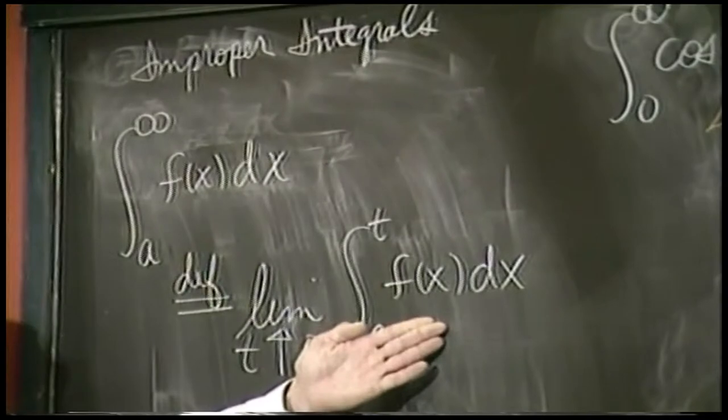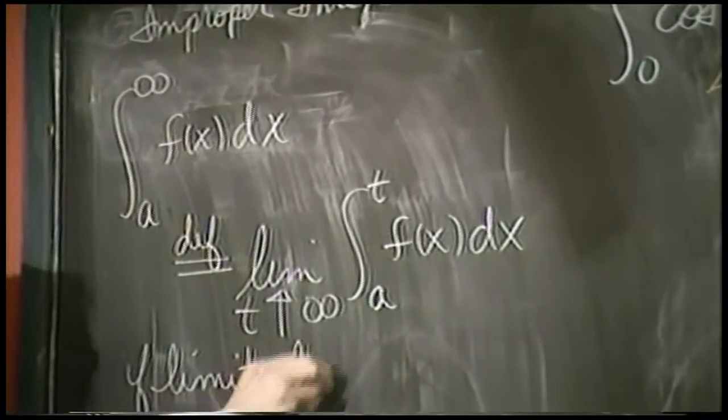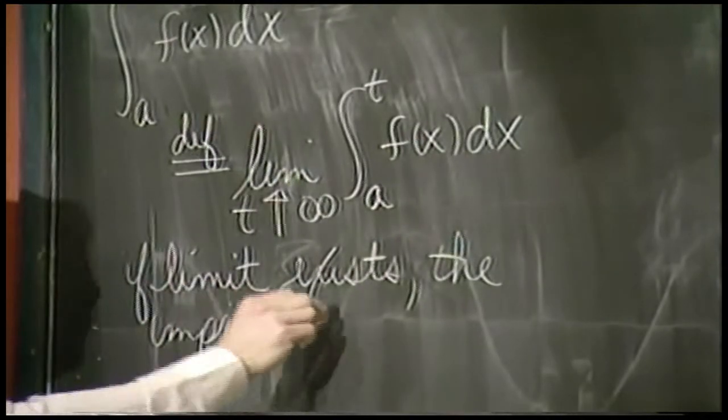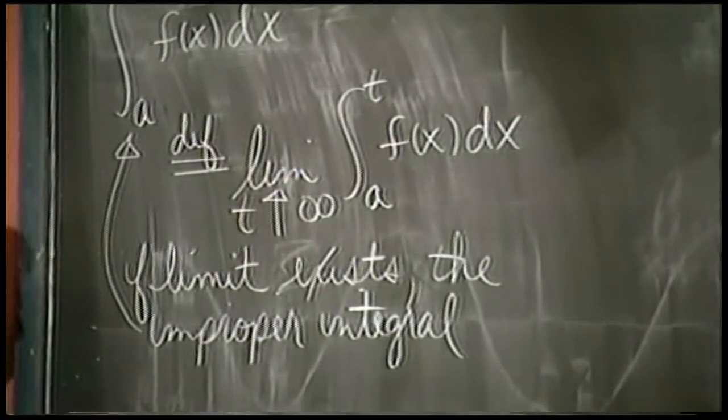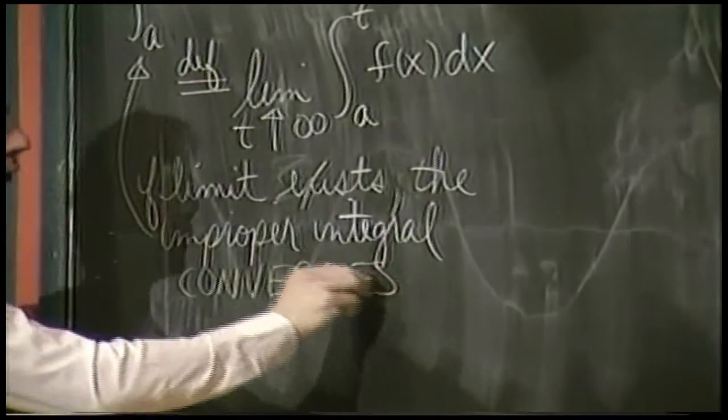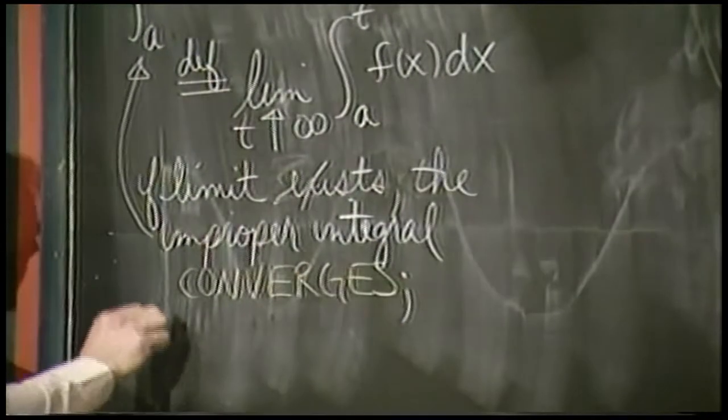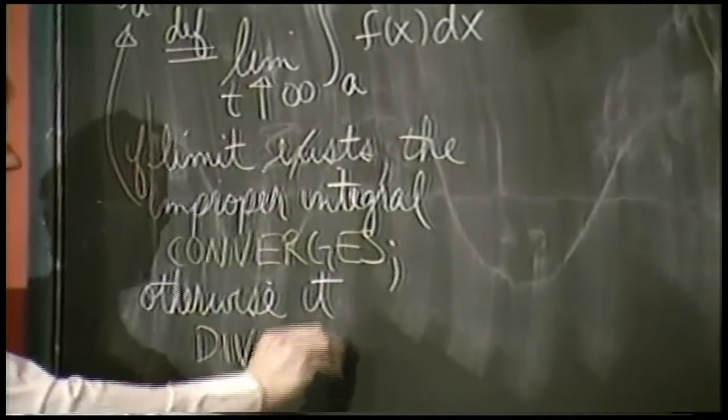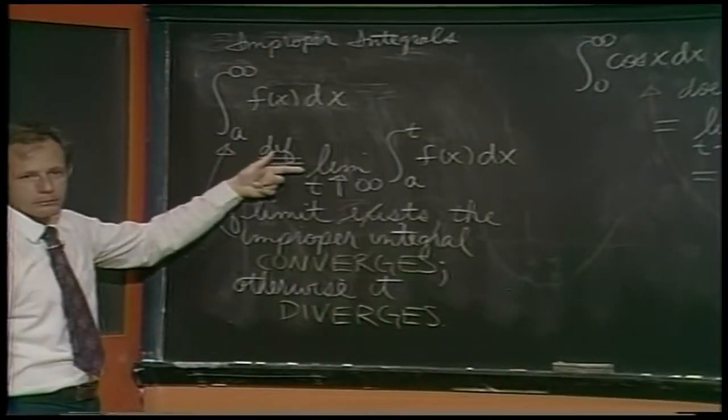What you're going to do for your homework problems is evaluate this. Check to see if the limit exists. If the limit exists, the improper integral, I never told you what that is, but that's one right up there staring you in the face. It's improper. That improper integral is said to converge. So there's a new word. You'll see it in bold black print in your book. If the limit exists, the improper integral converges. Otherwise, it, we say, diverges.